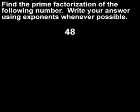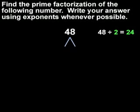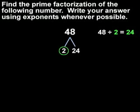To find the prime factorization of 48, first create a factor tree with two branches. When a number is even, it's often easiest to start by dividing by 2 to find factors. Since 48 divided by 2 is 24, we know that 2 and 24 are factors of 48. So we write 2 and 24 at the bottom of the branches. Next, we circle any prime factors in the factor tree. Since 2 is prime, we circle 2.